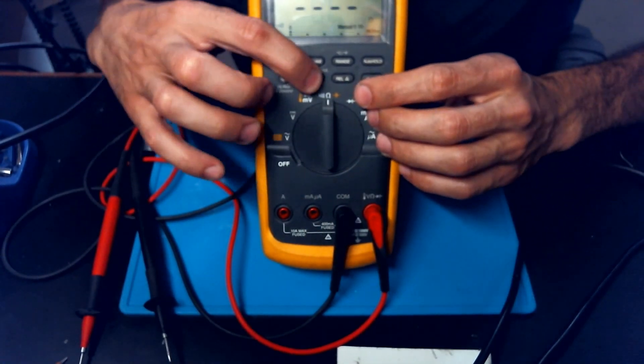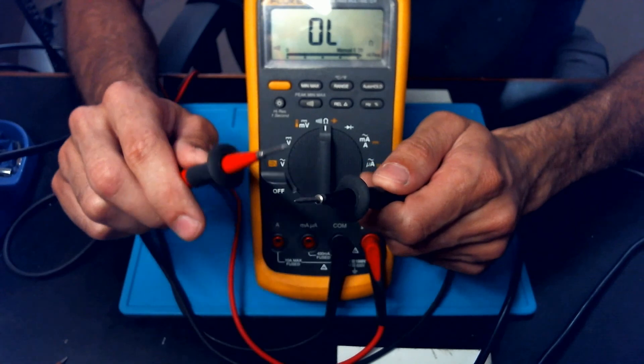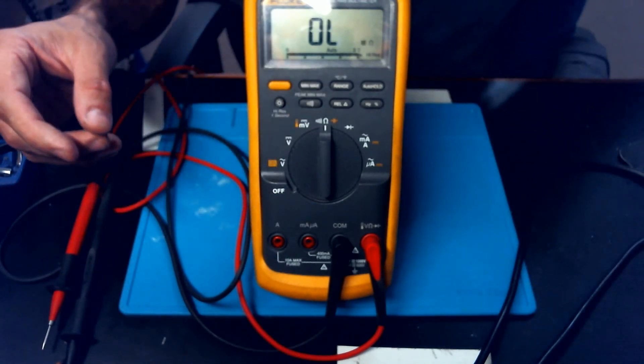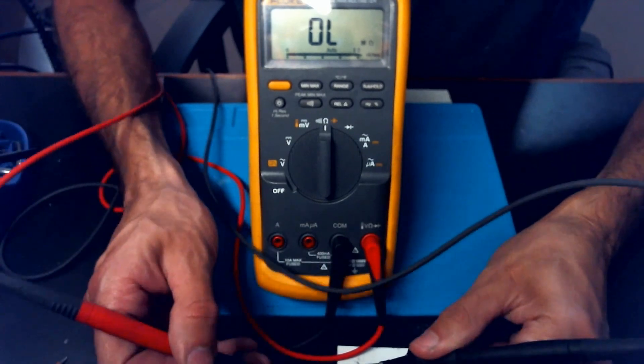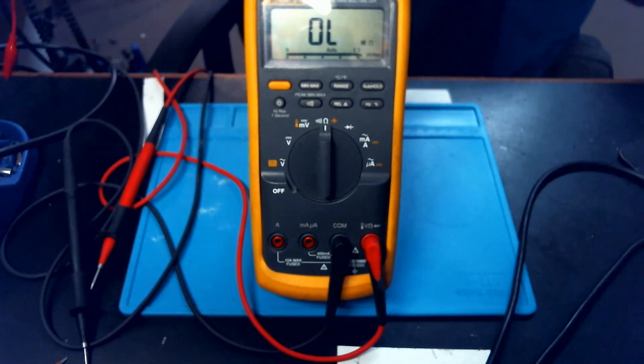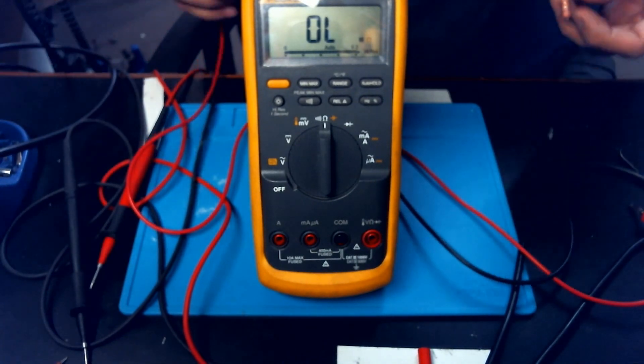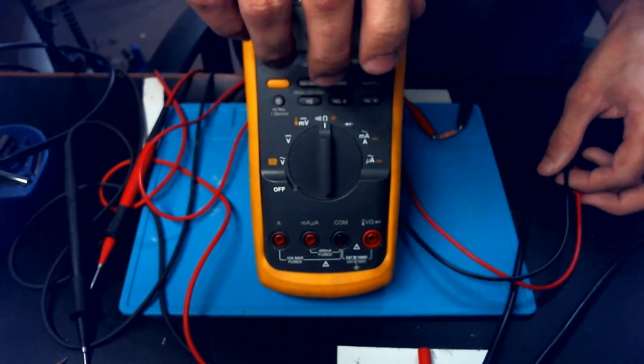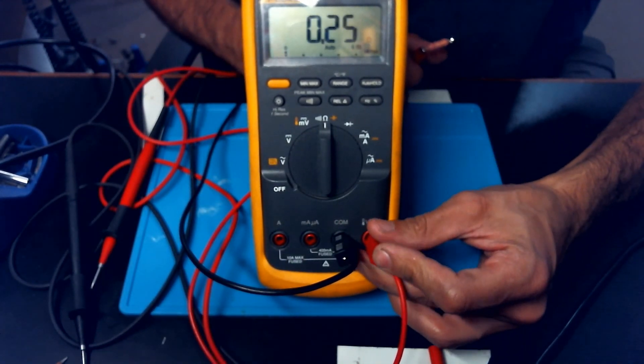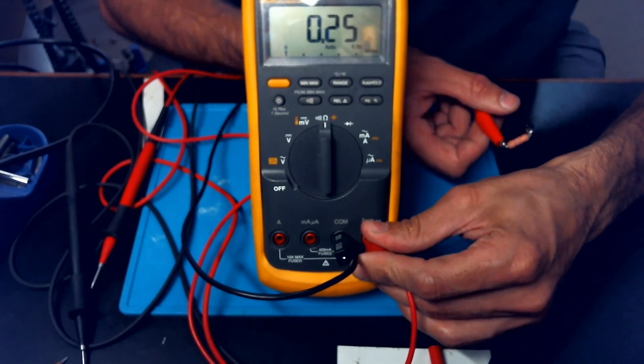Then, of course, you have continuity. Fluke is well known for having a really good continuity mode on their meters. You can do a real quick resistance check, just to kind of check out the auto range speed on this thing. Let's go ahead and swap to these jacks to make it a little bit easier. Not too bad.